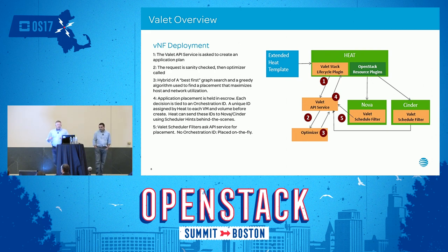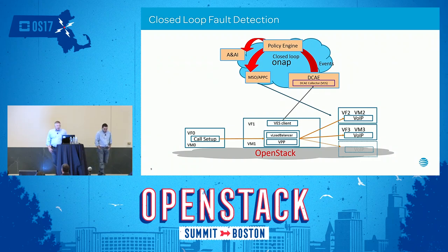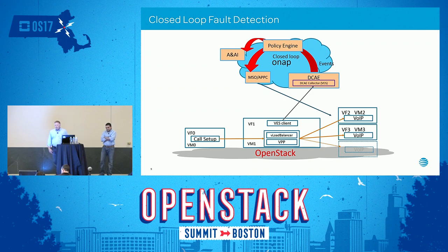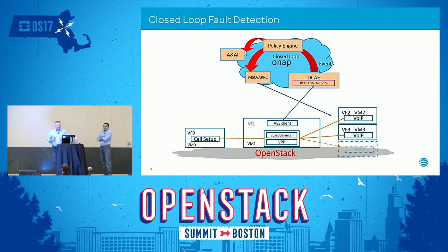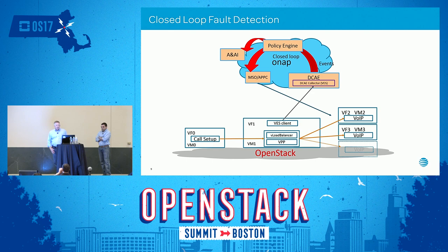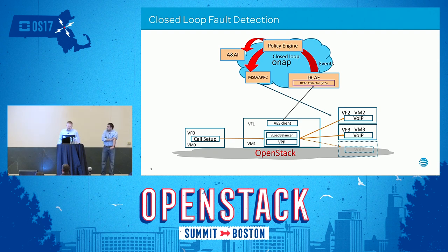We've got our VNF deployed. Now let's look at control loop scenarios. We have our VoIP VNF deployed in the Boston region. There's a conference, lots of people making phone calls, and we're reaching a threshold. The VES — Virtual Event Stream — sends information back up to the DCAE component. The policy engine kicks in, says we're reaching a threshold, and triggers deploying another VNF. Master Service Orchestrator gets called, the App Controller gets called, and another VNF is deployed. When the conference ends, we don't want to keep paying for VNF licensing, so we reduce our VNFs. That's a quick look at a control-loop scenario.